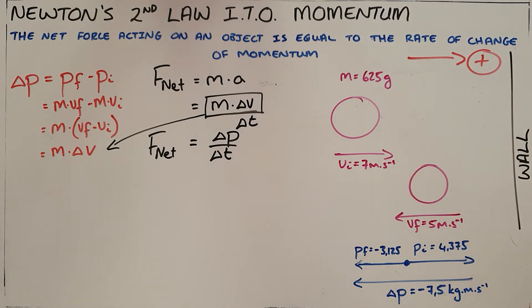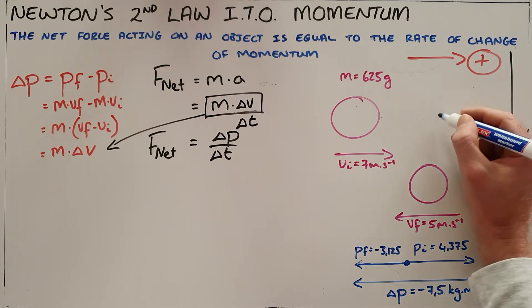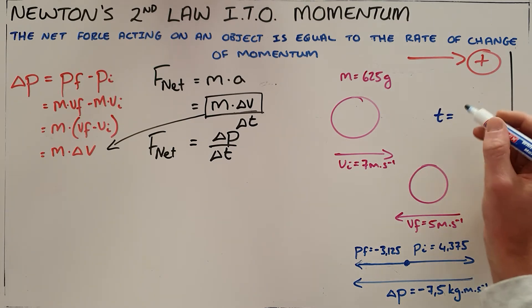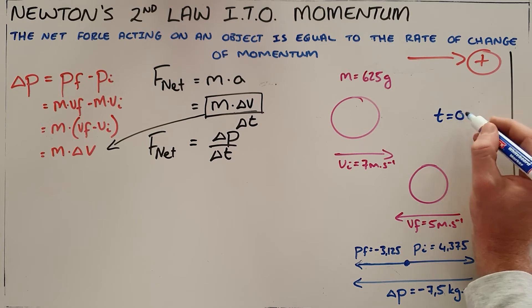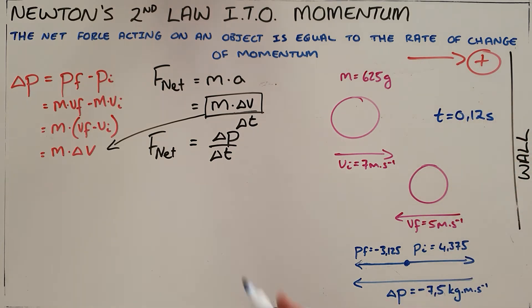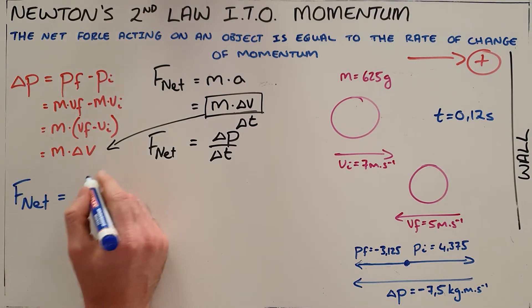And as long as we know how long this ball is in contact with the wall, in this example, I'm going to say that the ball is in contact with the wall for 0.12 seconds. That now allows us to calculate the net force acting on this ball.